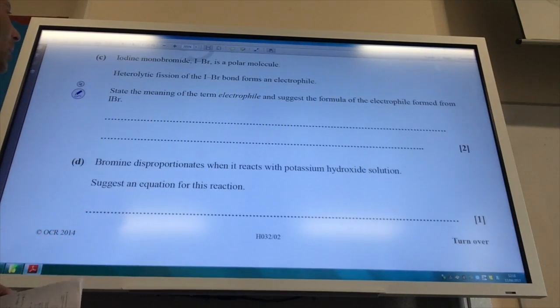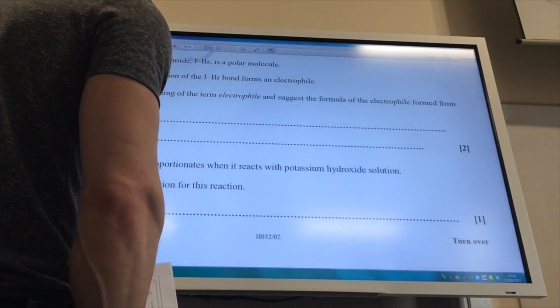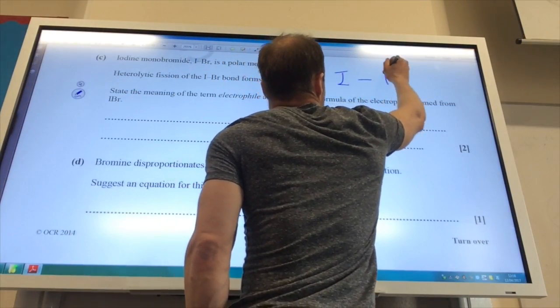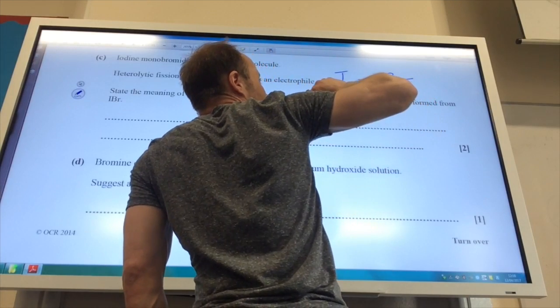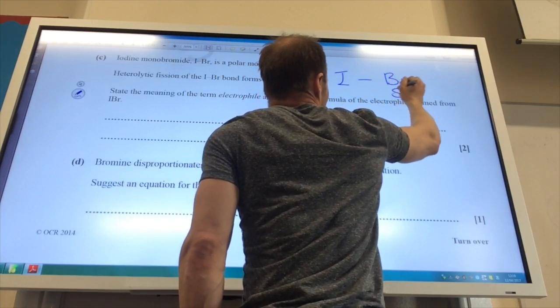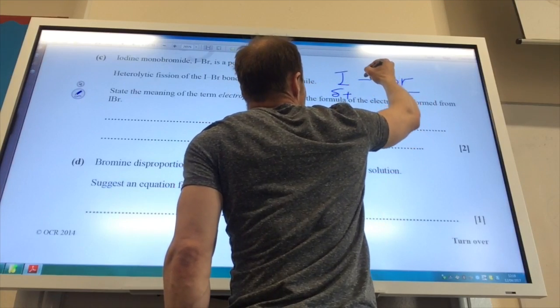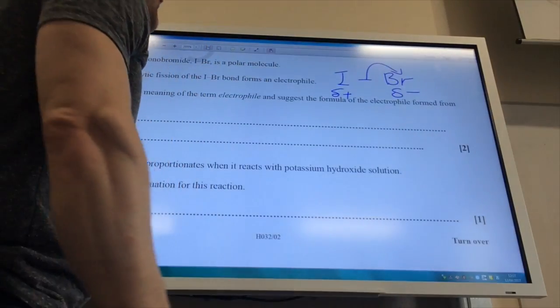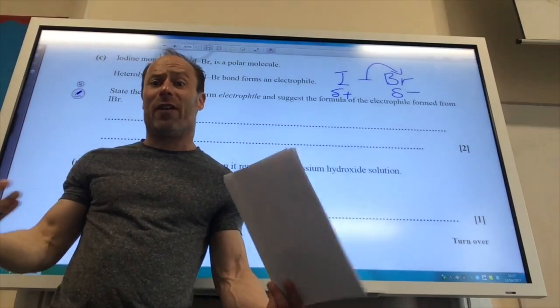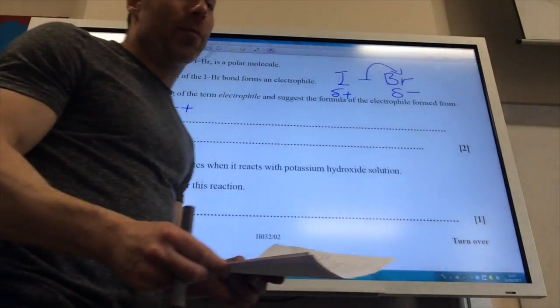So, iodine monobromide is a polar molecule. A heterolytic fission occurs to form an electrophile. State the meaning of an electrophile and the form of the electrophile performed. OK, so if you think about it, IBR, who is the most electronegative out of those two? Well, if you remember, electronegativity increases up group 7. Fluorine is the most electronegative. So bromine is going to be delta minus and iodine delta plus. So when heterolytic bond fission goes, the electrons will go to the bromine to leave me with I plus, which is going to be my electrophile. If you're an electrophile, you love electrons, so you're going to be positive. And what is an electrophile? Well, an electrophile is an electron pair acceptor.